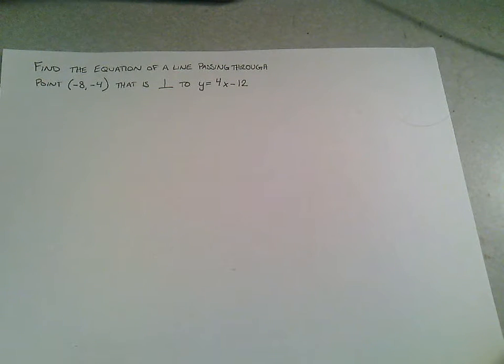So today, we're looking at how to find the equation of a line that's passing through a given point and is perpendicular to another line equation. Here, we're given the point (-8, -4), and we want a line that is perpendicular to y = 4x - 12.